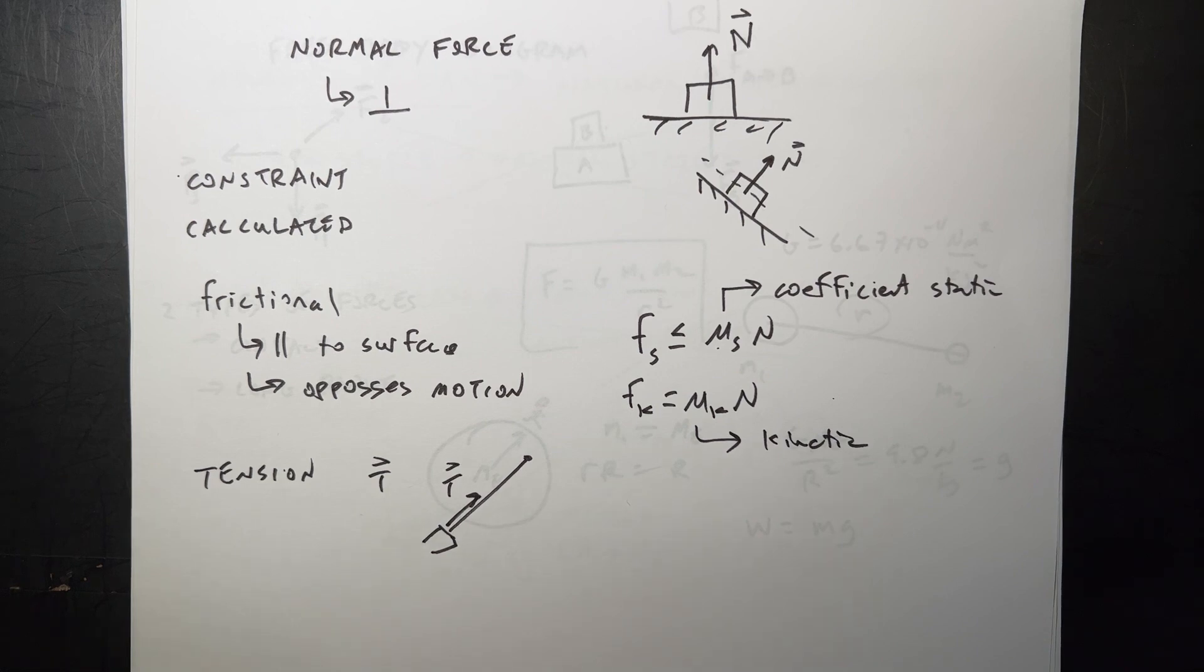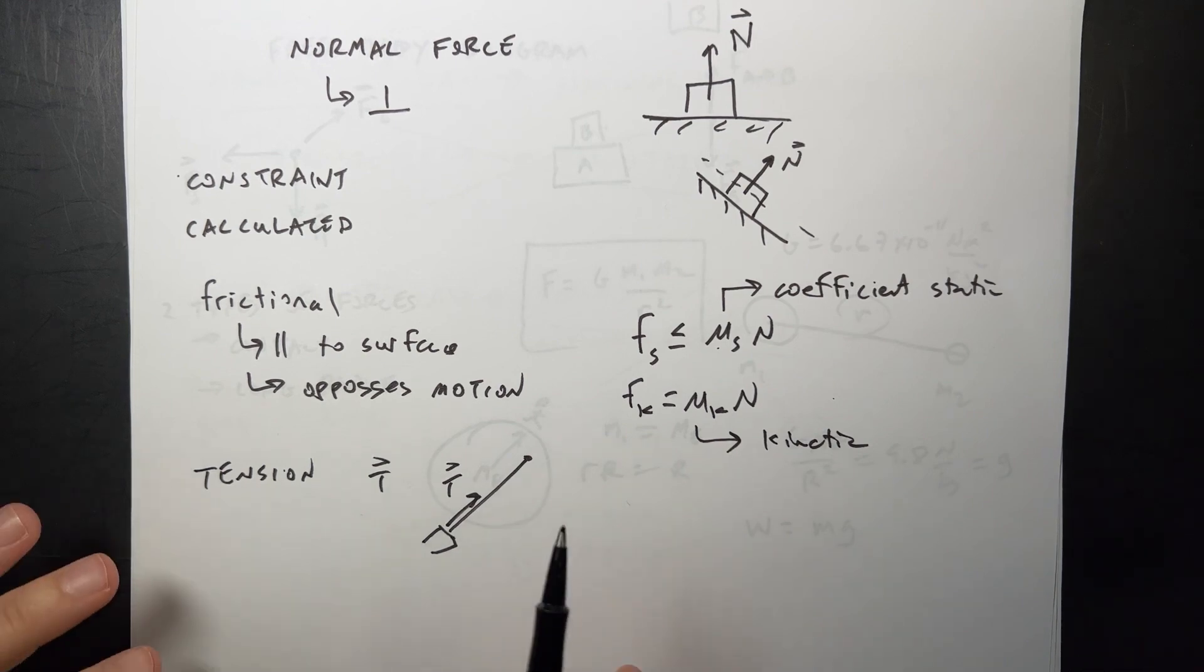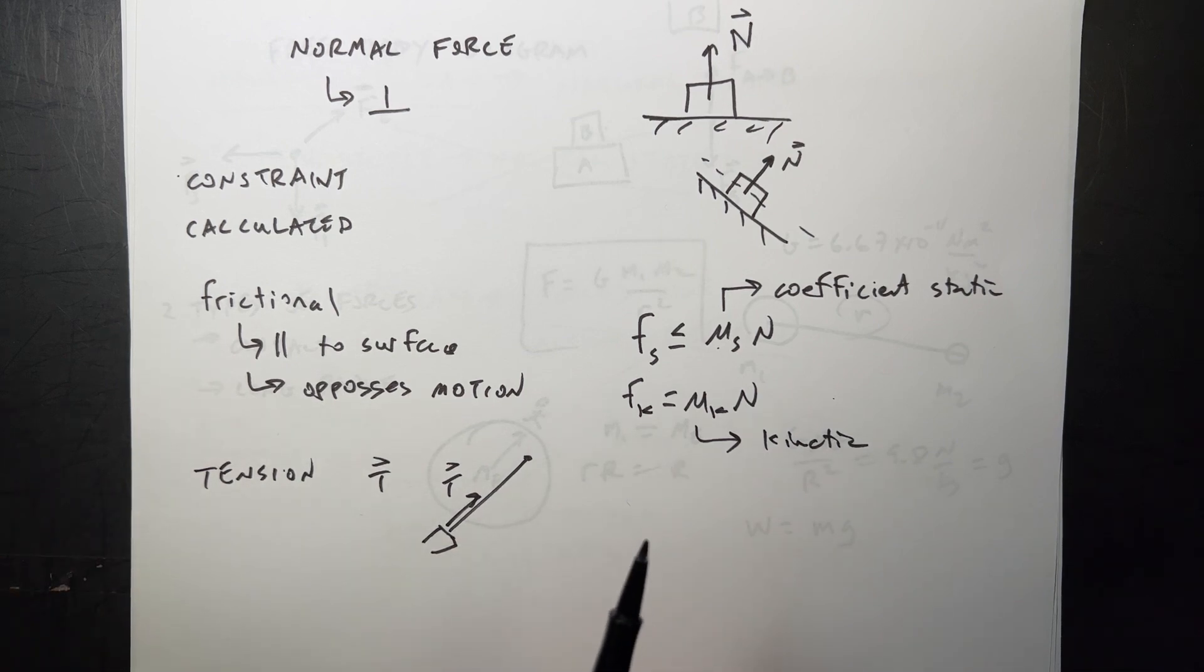To summarize chapter two, it's some of the forces, net force, what are forces, and how do we add forces. We deal with them as vectors. So we have the gravitational force, the gravitational force on the surface of the earth, the normal force, tension force, friction force. And that's that.